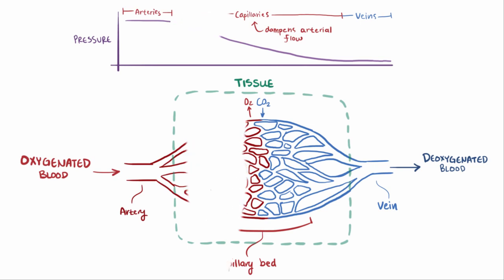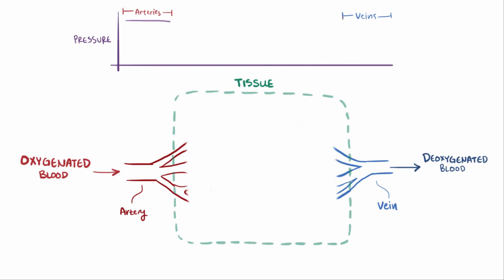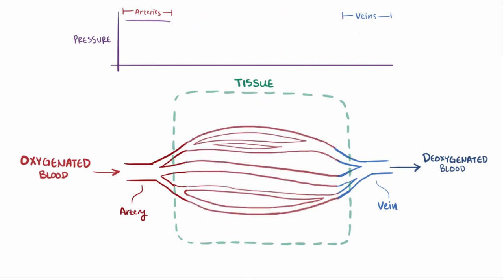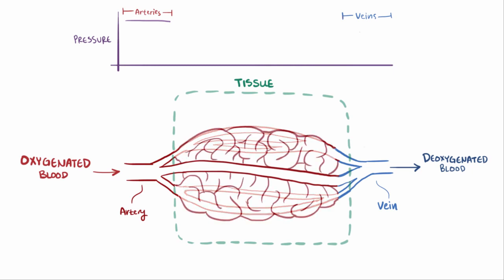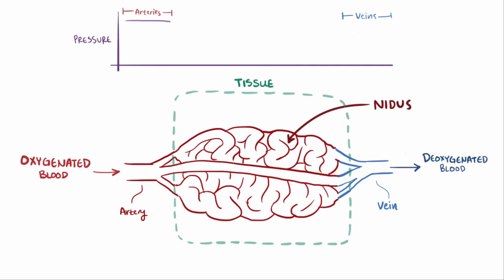With AVM, this whole capillary bed isn't there, and a group of arteries directly link up with a group of veins instead. The vessels in the AVM can start to tangle up and are called a nidus, which is Latin for nest. When a single artery and a single vein link up abnormally like this, it's called an arteriovenous fistula.